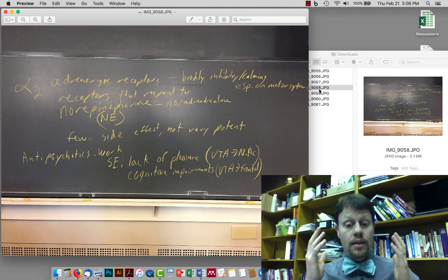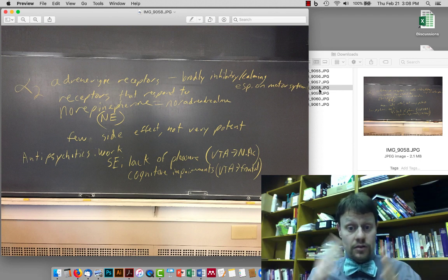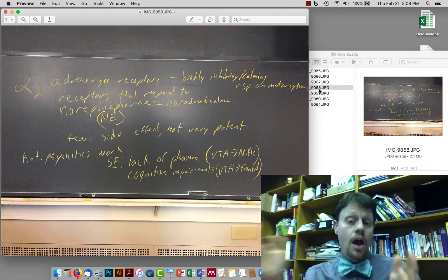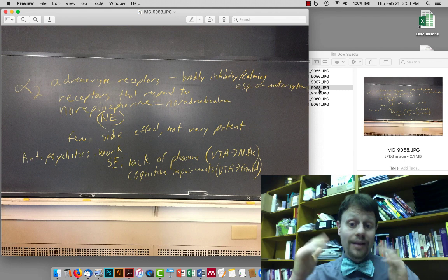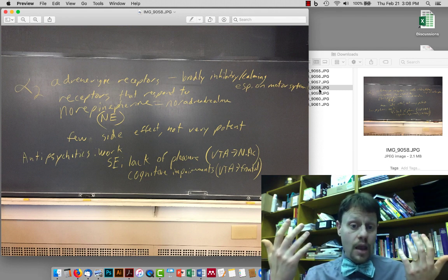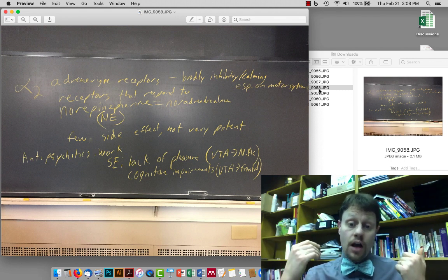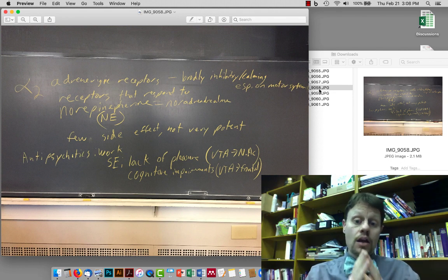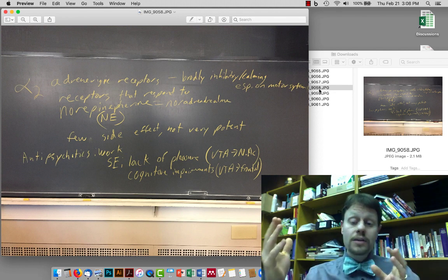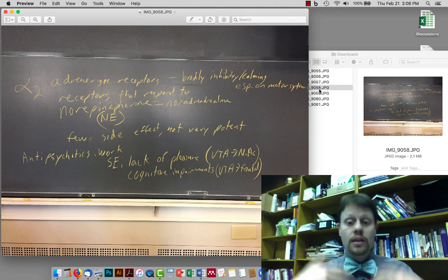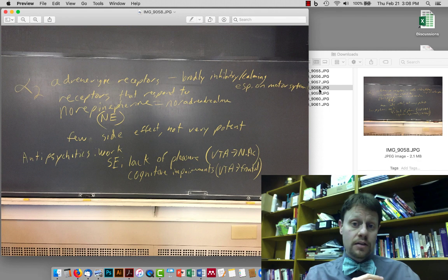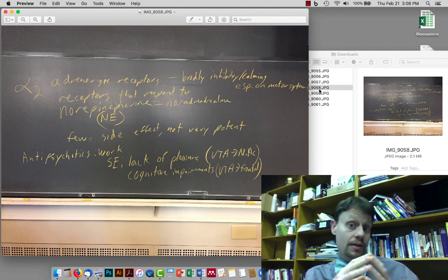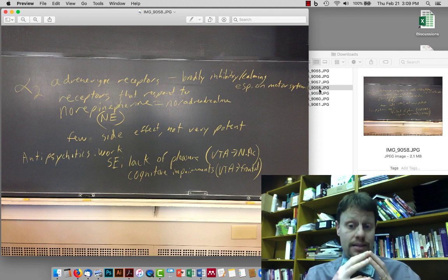This is because there's another dopamine projection, the ventral tegmental area to the nucleus accumbens, which is what allows us to feel pleasure and joy. And then also there are cognitive impairments, because as we'll talk about with ADHD in the next unit, the ventral tegmental area to frontal lobe is involved in cognitive regulation, attention, and so on. And altering or blocking dopamine signaling throughout the brain will block it at these two areas as well and cause these side effects.